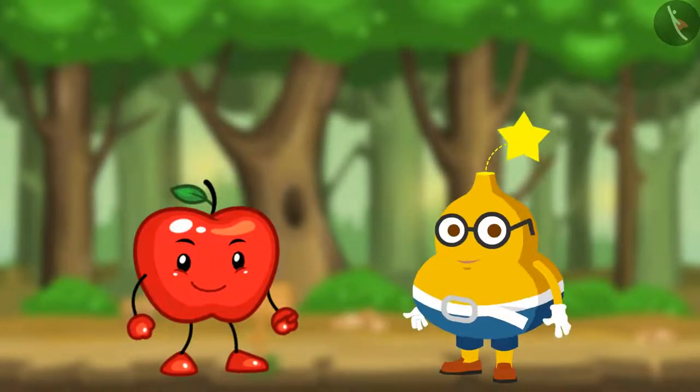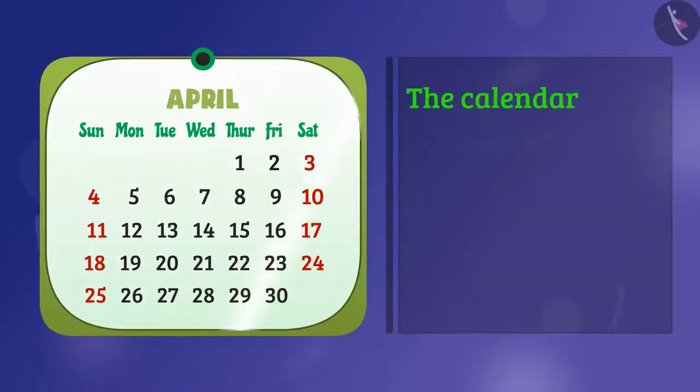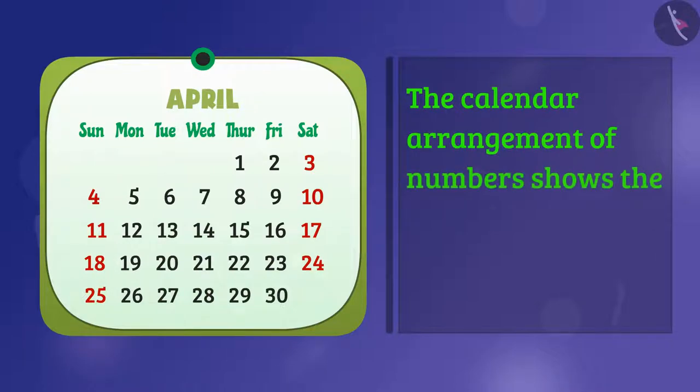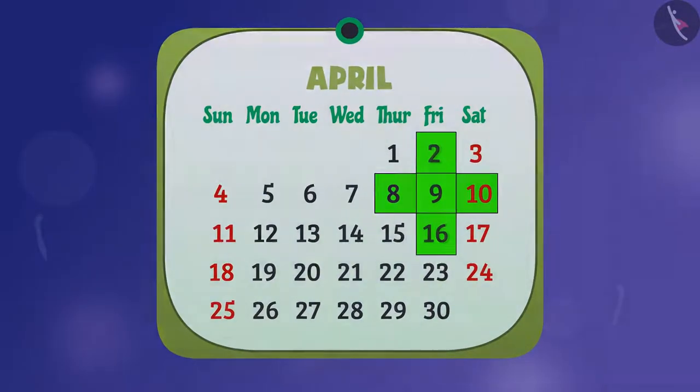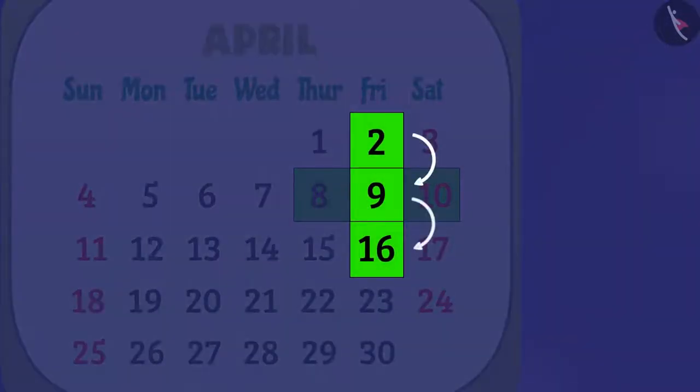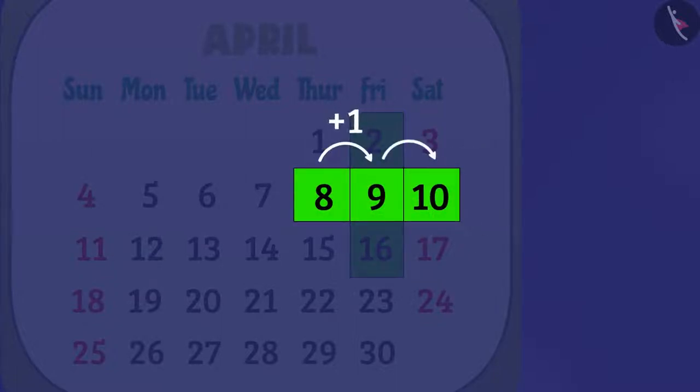Appy, now let me tell you that the calendar arrangement of numbers shows the way of designing and solving some cross puzzles. In a calendar, the column increases by number 7 and the row increases by number 1.